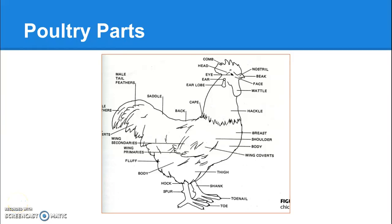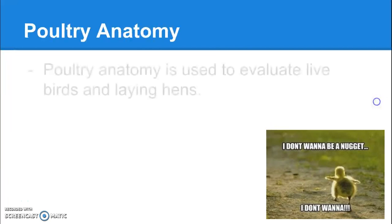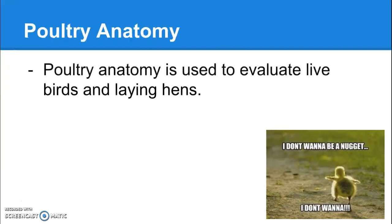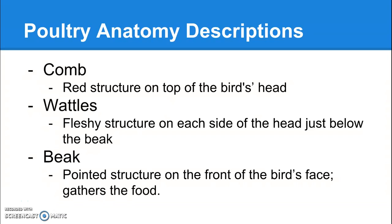Here we go with poultry, and remember poultry is the exception to every rule — they have completely different parts than cattle and swine. Poultry anatomy can be used to evaluate live birds, but also laying hens. Here are the different anatomical parts of poultry.